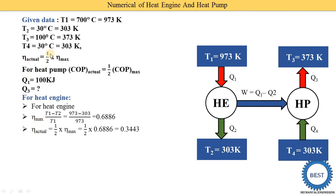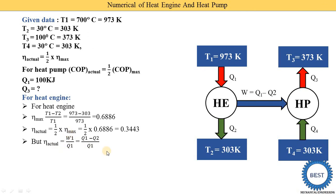The actual efficiency is half of the maximum efficiency. Since maximum efficiency is 0.6886, the actual efficiency is 0.3443. We know that actual efficiency equals output divided by input. For the heat engine, output is work done W1 and input is Q1. So actual efficiency equals W1 divided by Q1, which is also (Q1 minus Q2) divided by Q1.